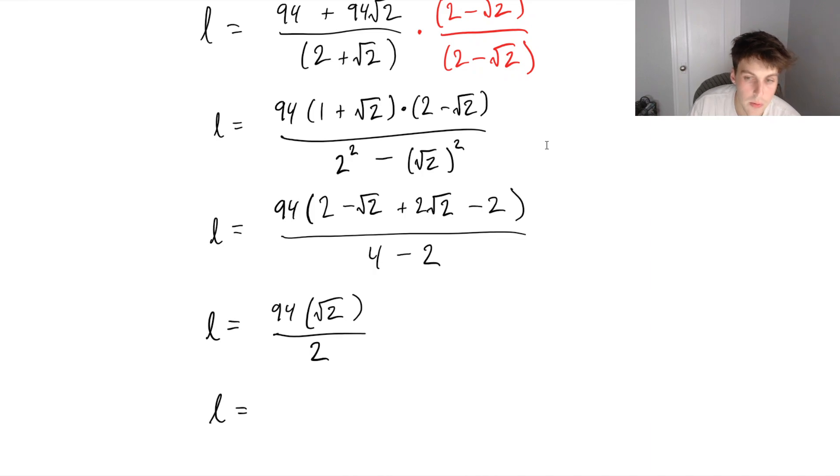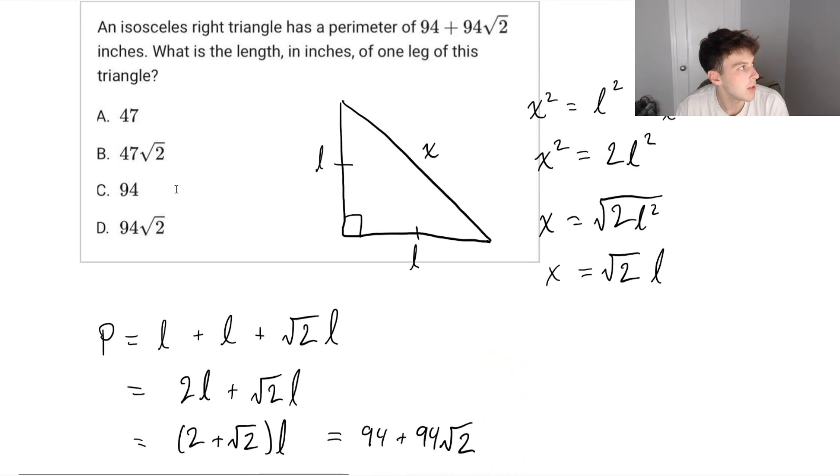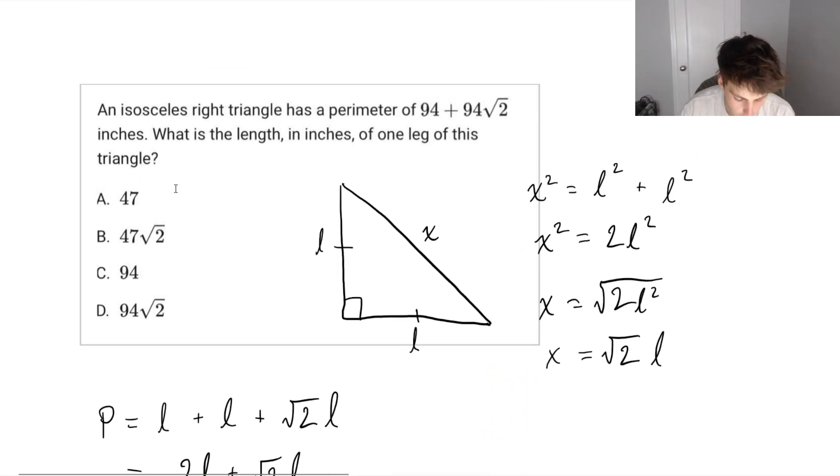And we know that that is 94 over two, well that's just 47, and we're left with 47 times root two is our length, and you can see that looks like option B is our answer for this one as well.